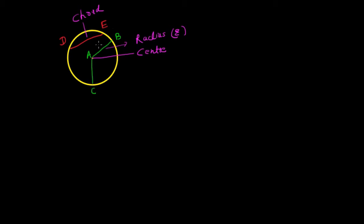But when this chord passes through the center of the circle, such a chord is known as the diameter of that circle. So we label the points F, A, and G — length FAG is the diameter of the circle.